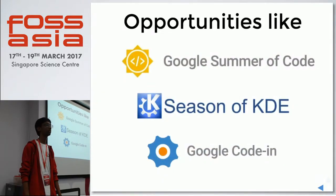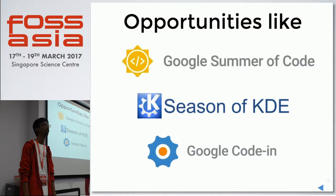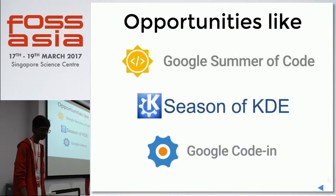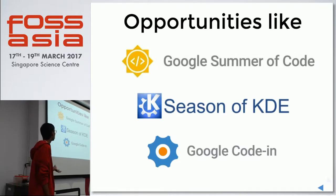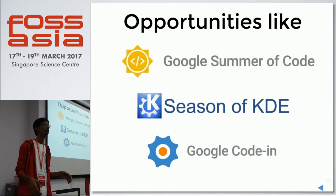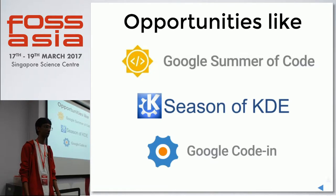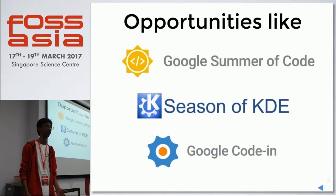There are opportunities like Google Summer of Code, Season of KDE, and Google Code In. Since we are under KDE organization, we get around 6-7 Google Summer of Code slots for different projects related to Wiki2Learn and MediaWiki. Season of KDE is a program similar to GSoC but unpaid — you work with developers for 3 months and if you complete the project, you get goodies from KDE and a certificate. Google Code In is for pre-university students aged 13 to 17, where we give small tasks for students to get involved with the open source community.